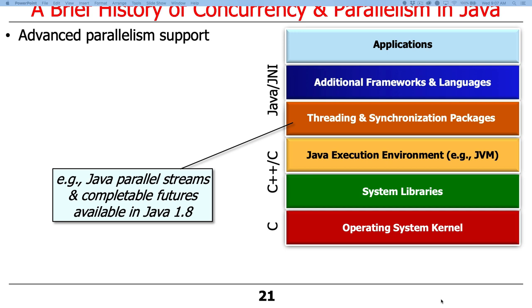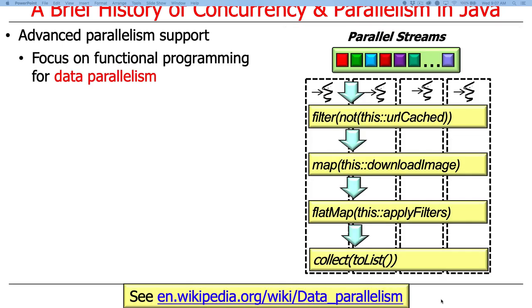With Java 1.8, which came out in 2014, they added two primary new capabilities: streams and parallel streams, and something called completable futures, which is a variant of the reactive programming model. These two features are what I consider modern Java for modern parallel computing. The focus is on functional programming for data parallelism — rather than doing all that forking and joining yourself, with parallel streams you write functional code and the streams framework splits the data into chunks and allocates them to different threads running in a common fork-join pool.